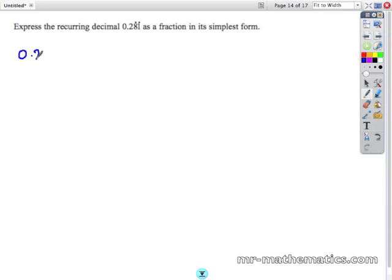We're going to express 0.281 recurring as a fraction in its simplest form. We'll do that by splitting it up into 0.2 and 0.081 recurring.